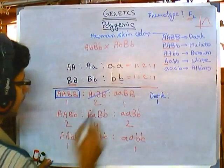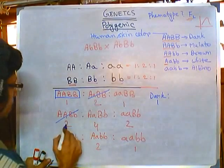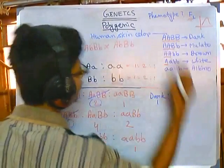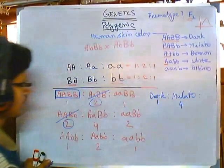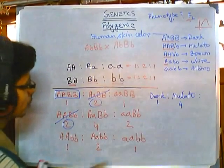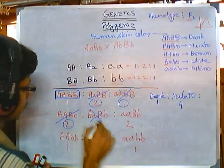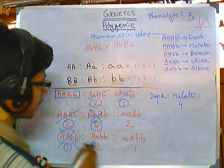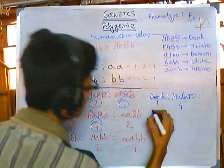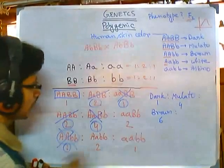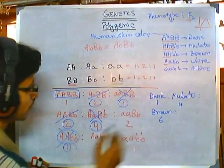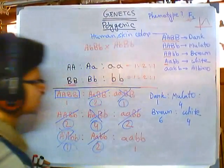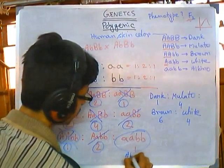For three dominants — mulatto — we look at which combinations give three dominant alleles. We find two such combinations, each with coefficient 2, giving 2 + 2 = 4. So three dominants means mulatto, and the count is 4. For two dominants — brown — we find combinations giving coefficients 1 + 4 + 1 = 6. So brown is 6.